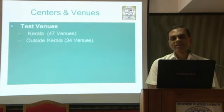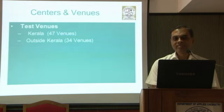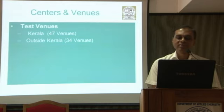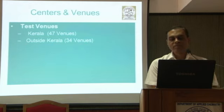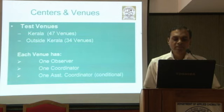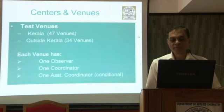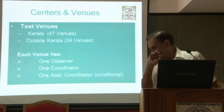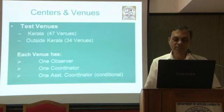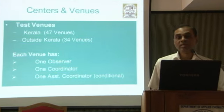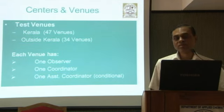This year, like last year, we have about more than 80 centres spread across the country — about 47 venues in Kerala and 34 outside. Each venue is going to have one observer, one coordinator and one assistant coordinator. The assistant coordinator is conditional; in those venues where the number is less than 400, you are not going to have an assistant coordinator.